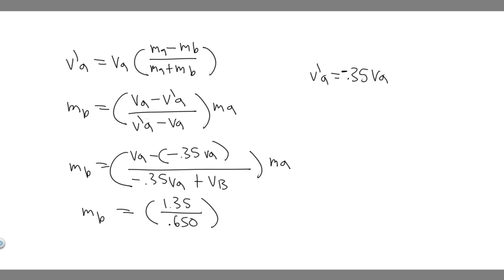So mb equals 1.35 over 0.650 times ma. If you go ahead and divide this, you're going to get mb equals 2.08 ma. You can't really find the number because we don't know the mass of a, but we can say that mb is going to equal 2.08 ma. This is your answer, and hopefully you found this useful.